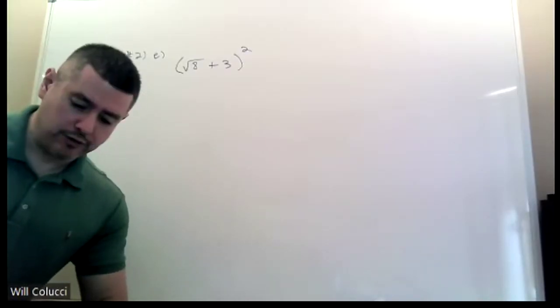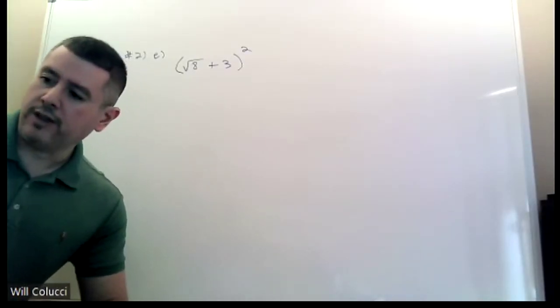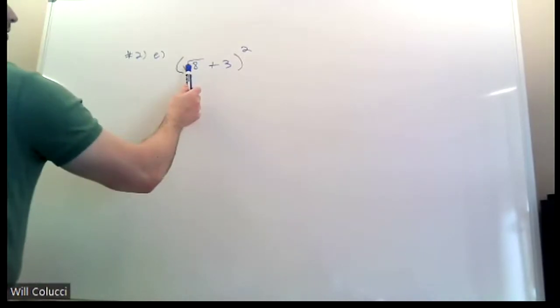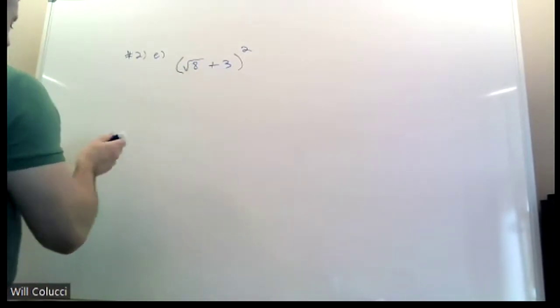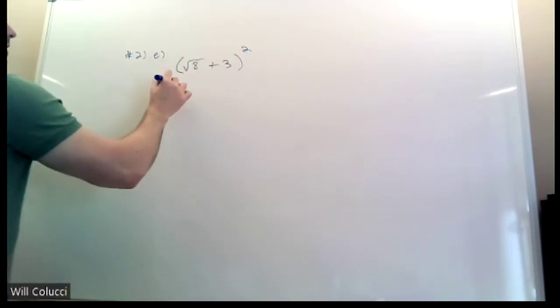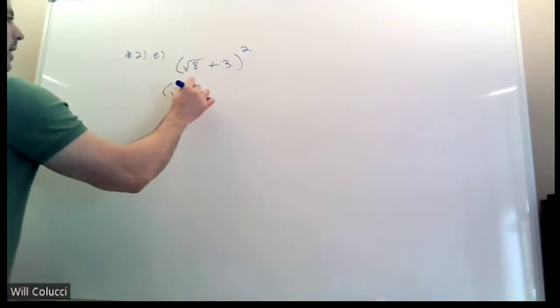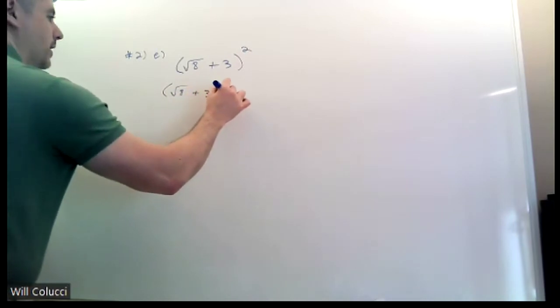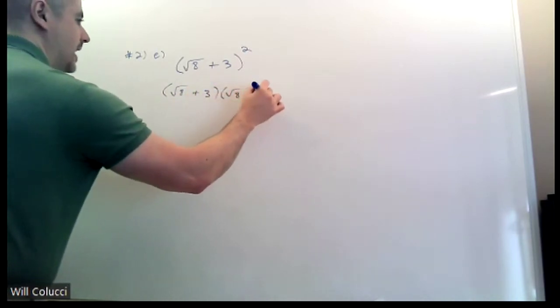Okay, so this is problem 2E of the review sheet. The one that I put on the test actually has a radical. There's a radical here and a radical there, but this is a good one to work. When you square, you multiply by itself. So just write it twice. Remember, you write it exactly the same.